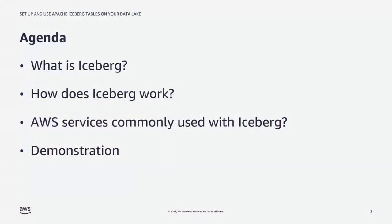The agenda for the session is as follows. I want to begin with a discussion of what is Apache Iceberg. I then want to talk about how does Iceberg work — a technical deep dive into the backend architecture of Iceberg. I'd like to discuss AWS services that are commonly used with Iceberg, and after covering these three points via PowerPoint, I'll pull up the AWS console and give you a demonstration of Iceberg working with our common AWS services. Let's begin by discussing what is Apache Iceberg.